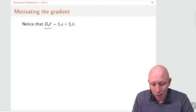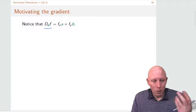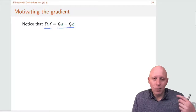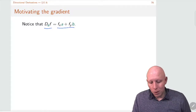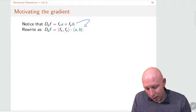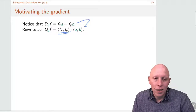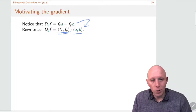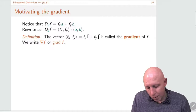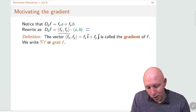Now if you look at this structure, there's another way we can reorganize it. We could think of f sub x times a plus f sub y times b as very similar to a dot product. So we could rewrite this first expression as a dot product of two vectors — one of which has the partial derivatives in it, and the other is the unit vector.